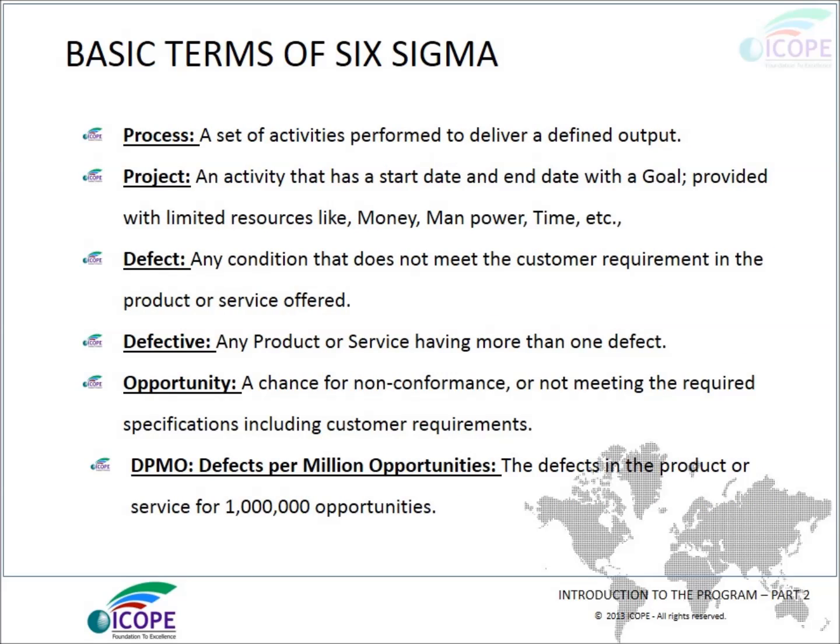What is a process? It is a set of activities performed to deliver a defined output. What is a project? An activity that has a start date and an end date with a goal, provided with limited resources such as money, manpower, and time. What is a defect? Any condition that does not meet the customer requirement in the product or service offered can be called a defect.